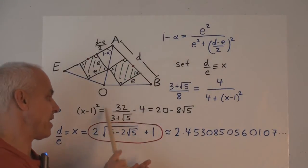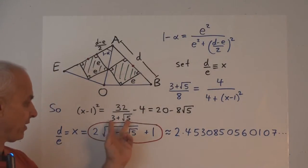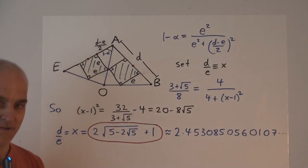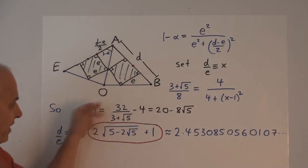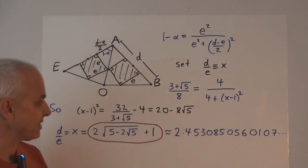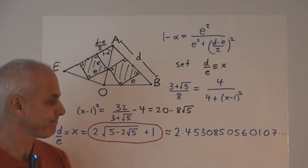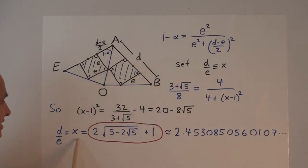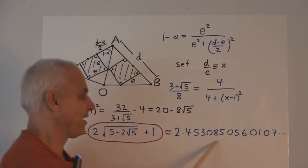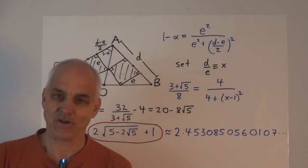If you take something like this and you want to simplify it, you multiply the top and the bottom by 3 minus root 5. That's how you rationalize something like that. You do that and you get 20 minus 8 root 5. So X, or our ratio D over E, is the square root of that plus 1. And there it is there, 2 square root of 5 minus 2 root 5 plus 1. And that's approximately the decimal expansion for it.